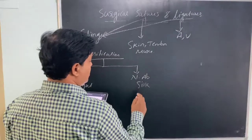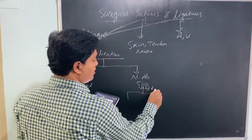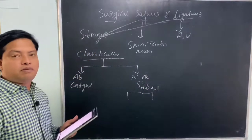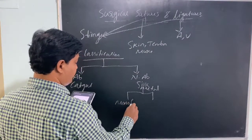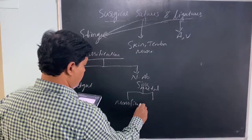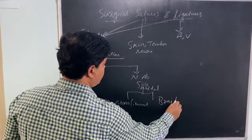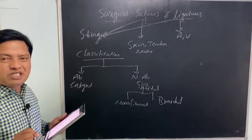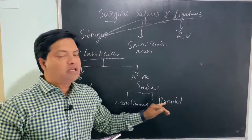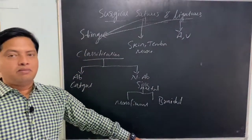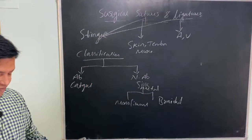Metal non-absorbable sutures are further classified into two types: monofilament and braided. Monofilament is smooth but does not have much strength. To give strength to the monofilament, it is braided, which gives the suture more strength.